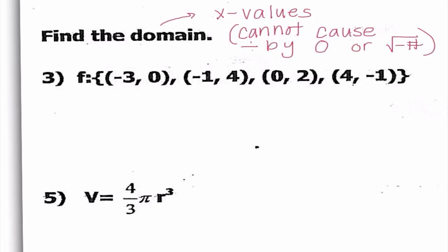Number 3 is the easiest case because it's just ordered pairs. We can write that the domain is {-3, -1, 0, 4}. I know this is the domain because all we did is take the x values of each of the ordered pairs.